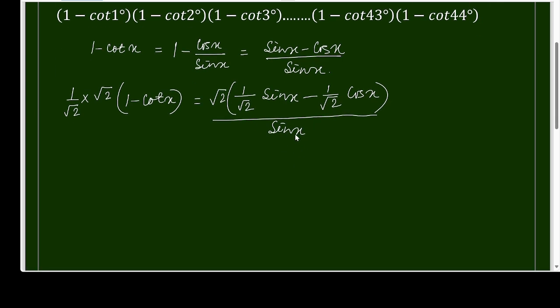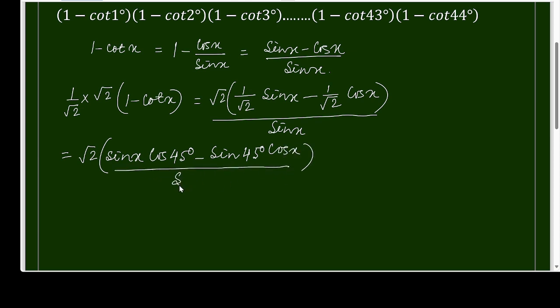The motive of doing this is to convert the numerator to a sine function. We know that 1/√2 = cos 45° = sin 45°, so the numerator becomes √2 · sin(x - 45°). This uses the sine subtraction formula, so the final expression is: 1 - cot x = √2 · sin(x - 45°) / sin x.